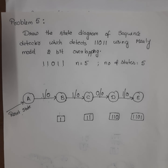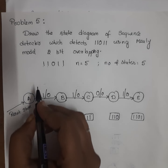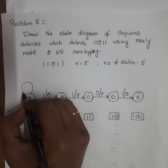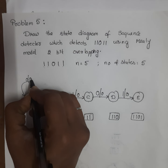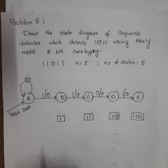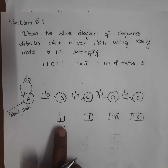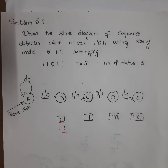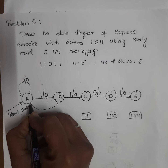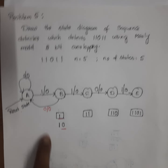Third step: we have to identify the pattern for 0 and 1. For input 1, the sequence transfers to the next state. For input 0, this is not our required pattern, so it stays in the same state — 0 by 0. Coming to state B: when input is 1, it goes to the next state. The sequence is not detected, so output should be 0.